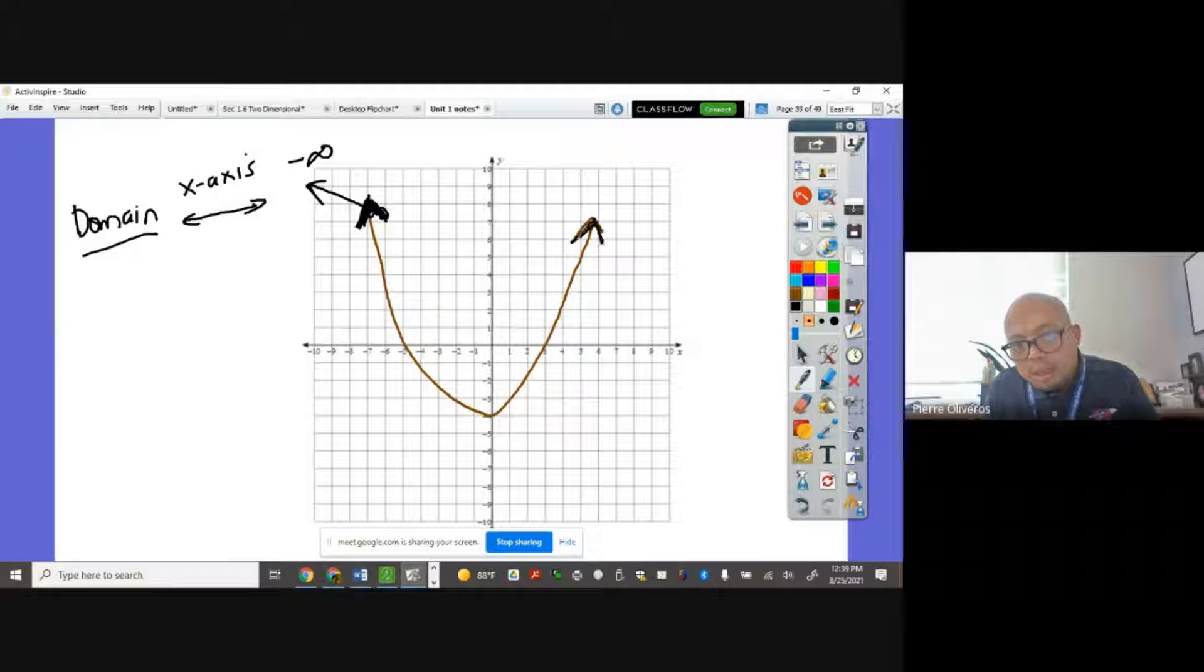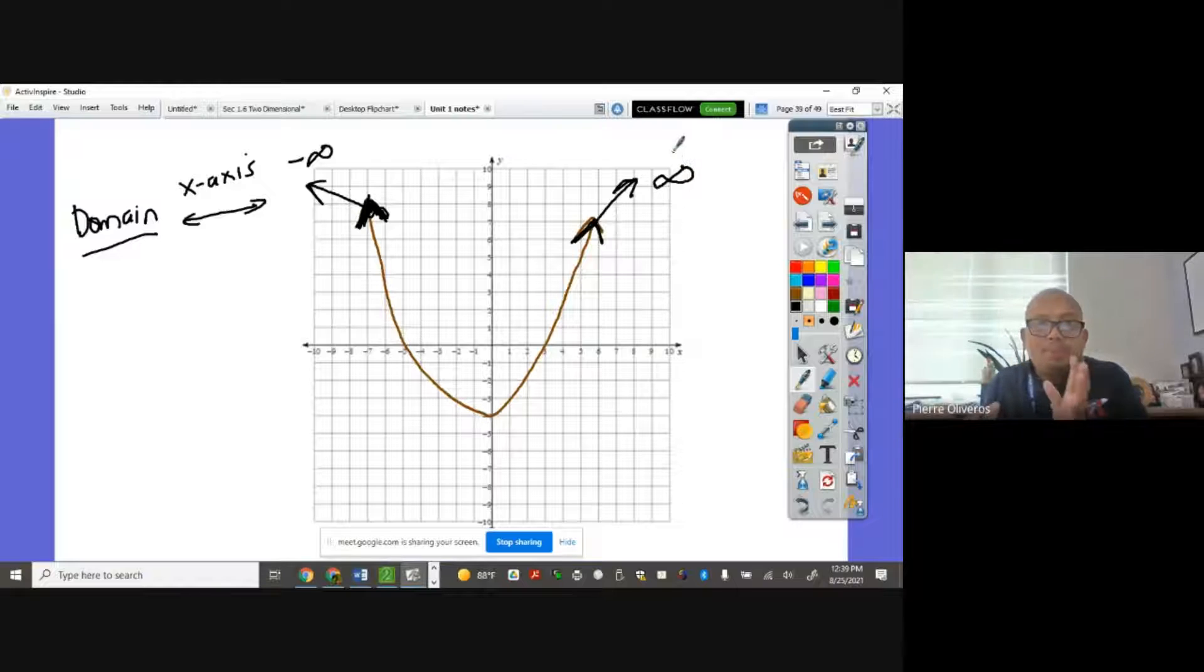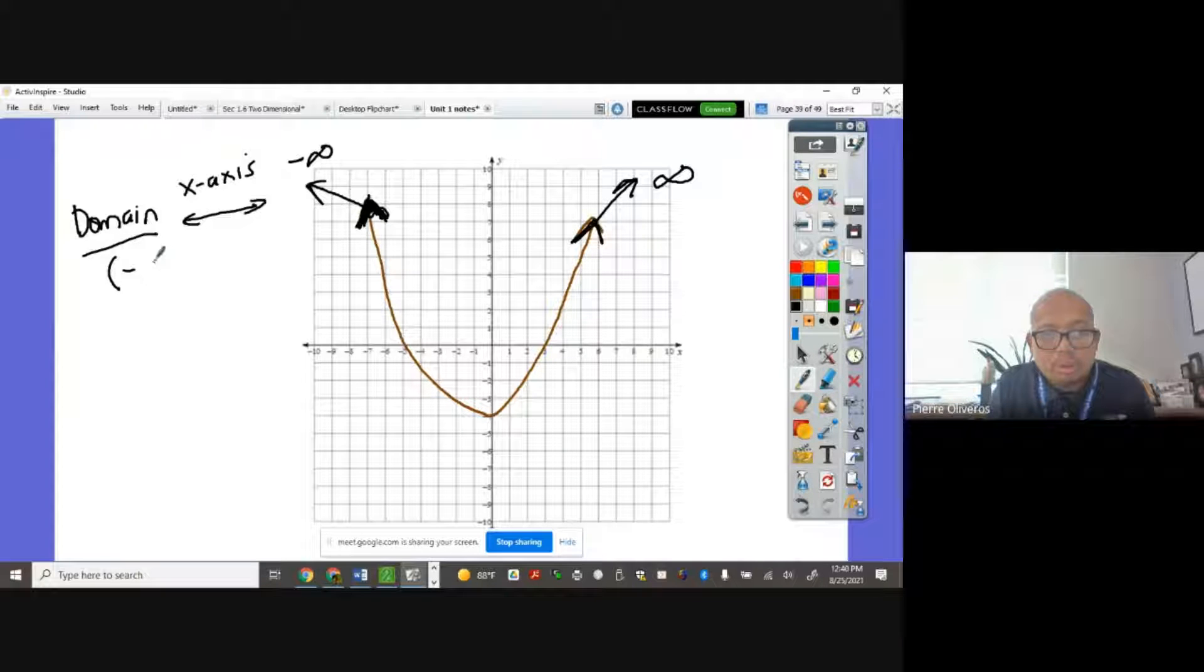When you go to the far right here, this keeps going to the right. That's going to the positive infinity because on the left side are the negative values of x. The right side are the positive value. So the domain here are all real numbers, or we write from negative infinity to positive infinity.